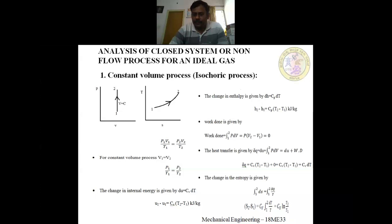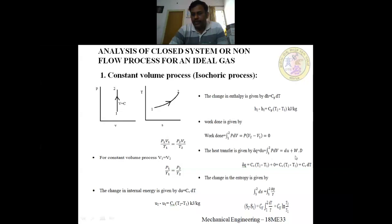The unit is per kg because we assumed mass as 1 kg. If you know the mass, multiply by it and the unit will be kJ only. For work done, we consider only displacement work, which is PdV. For a constant volume process, dV = 0, so the change in volume is zero. Therefore, work done is also zero for a constant volume process.